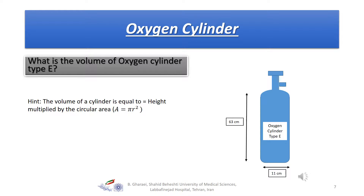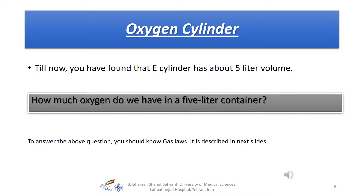To find the volume of a cylinder, you should multiply the height by the circular area of the base. You should reach a volume of 5 liters. But the question is: how much oxygen do we have in a 5-liter container? It is not simply 5 liters of oxygen — it depends on the pressure that you have. So you should know the gas laws, which will be discussed in the next slides.